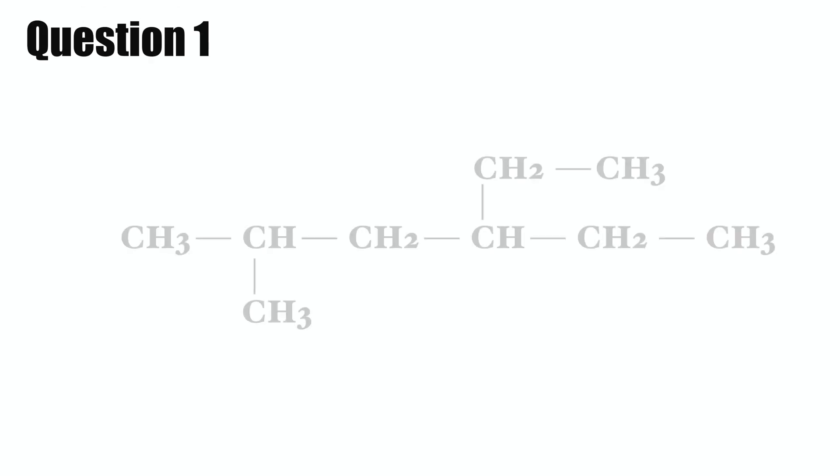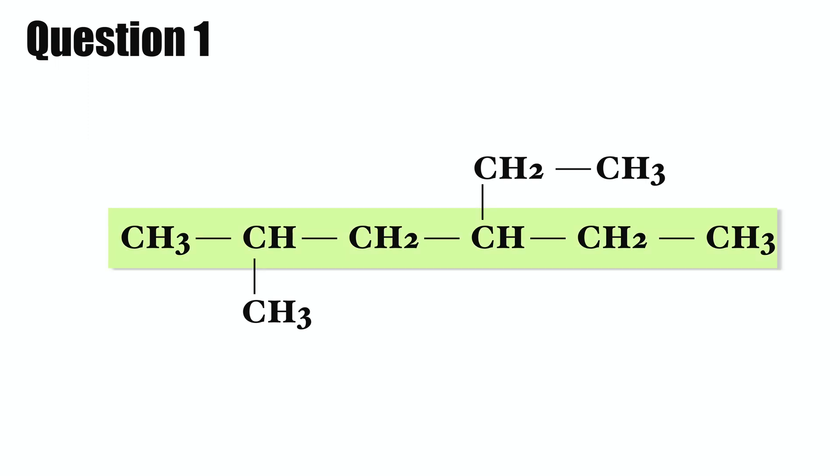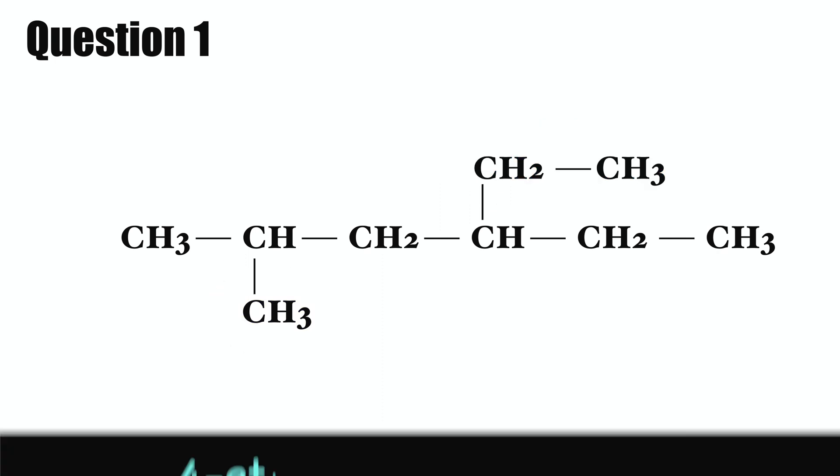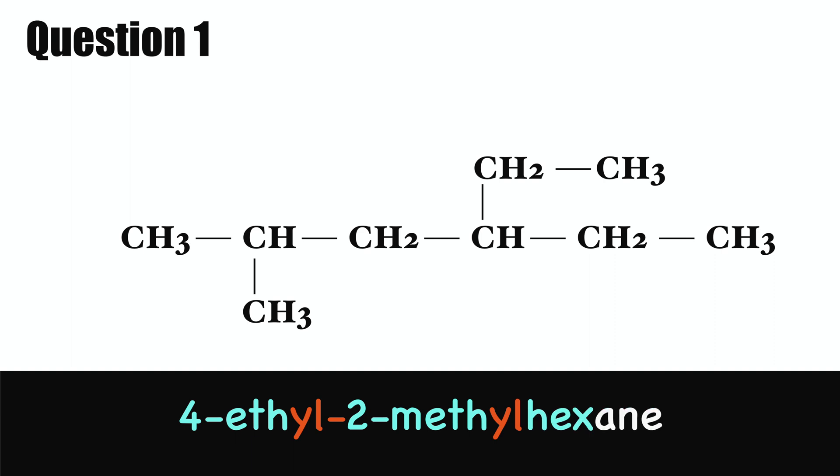Question one: what is the name of this compound? You can pause the video if you need more time. The longest chain or the parent chain has six carbons. There are two substituents: ethyl on carbon number four and methyl on carbon number two. This compound is called 4-ethyl-2-methylhexane.